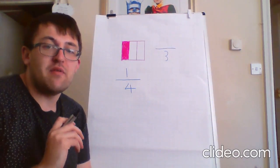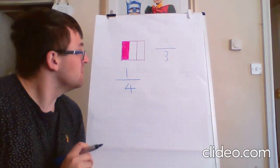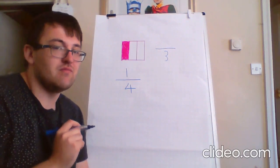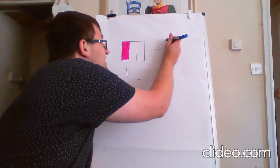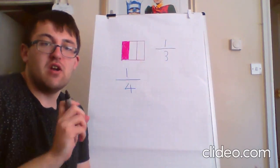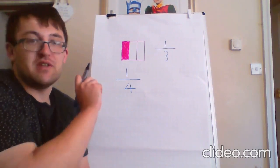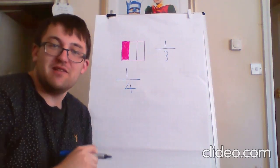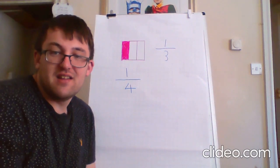Now, my numerator will be however many parts are shaded in, so let's have a look. One. So, my answer is one third. One third is shaded in. Bonus point if you realised that's a unit fraction.